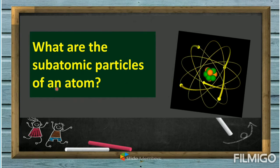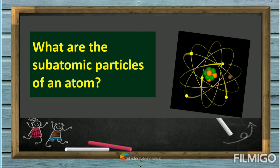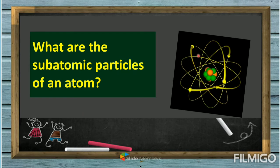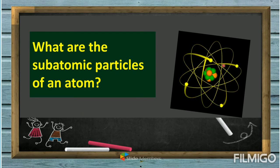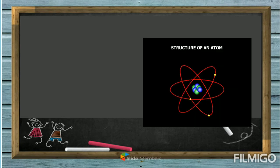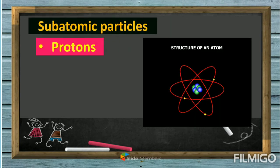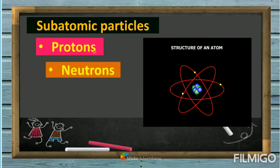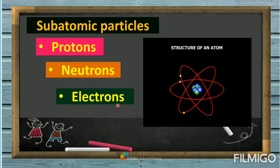So what are the subatomic particles of an atom? Look at this picture — this is an atom and these are the subatomic particles. The subatomic particles of an atom are the following: we have protons, neutrons, and the last one is electrons.